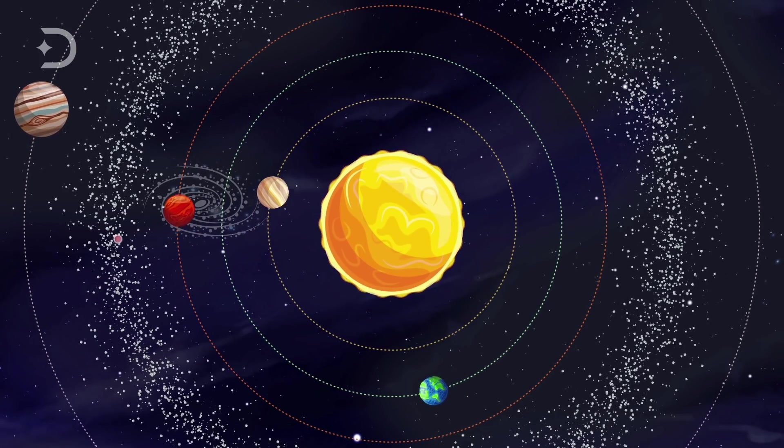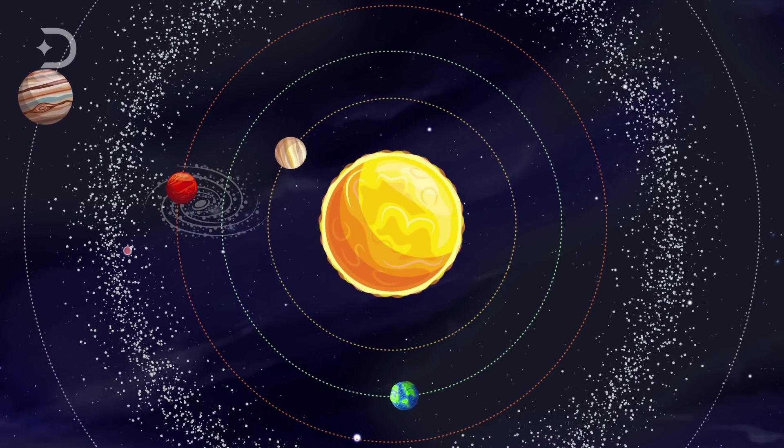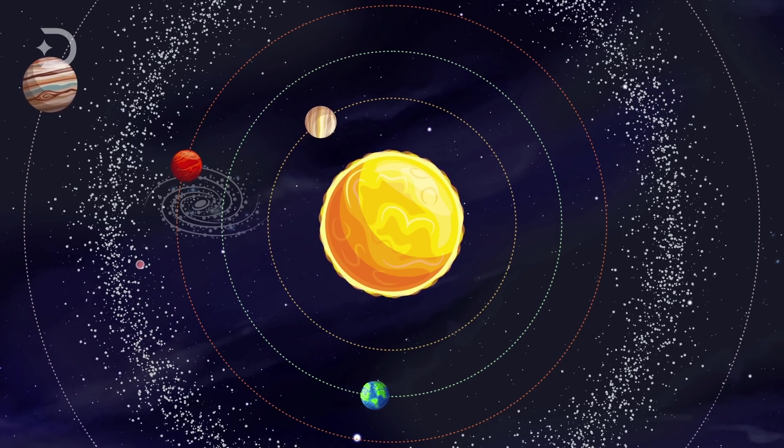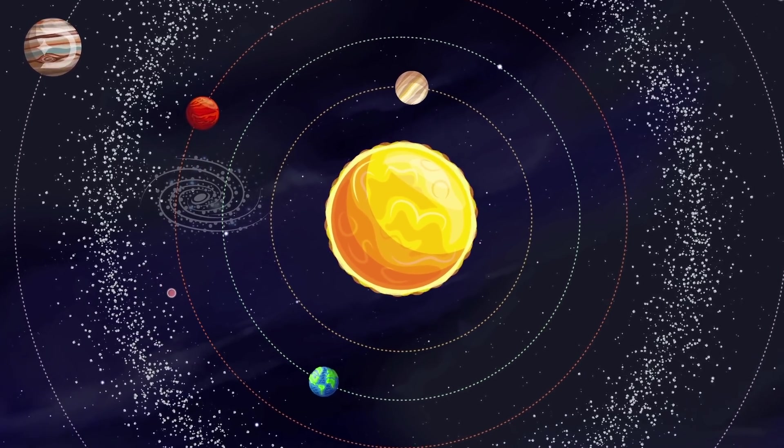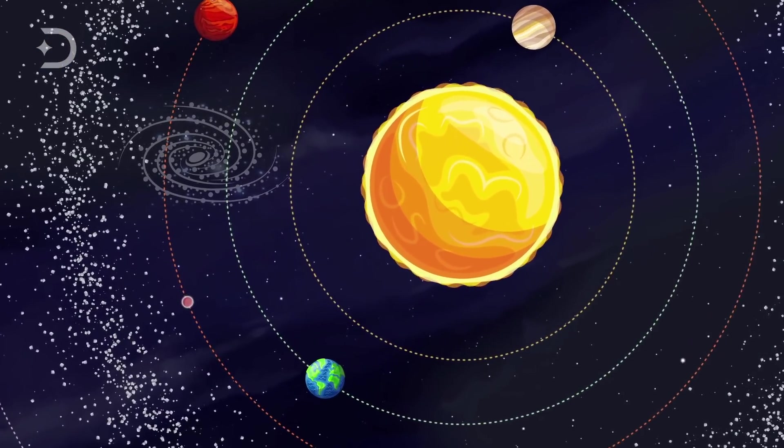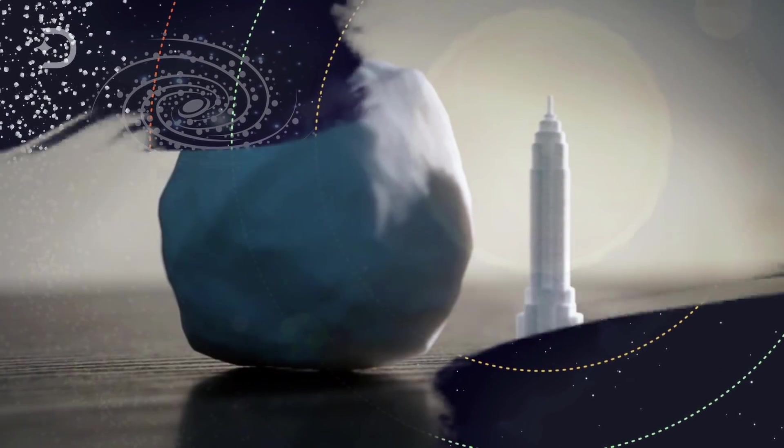However, the gravitational pull from Saturn dislodged it from the belt and it has drifted much closer to the Earth since then. It is very possible that this one could end up eventually hitting the planet in the last quarter of the 22nd century.